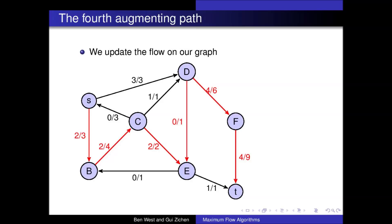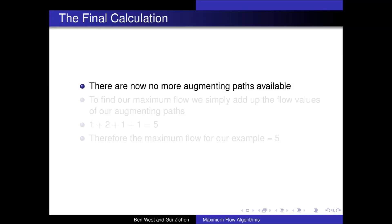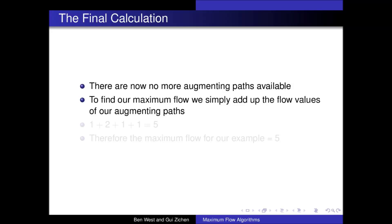Again we update our graph to show the flow now being pushed along each edge. At this point we can't find another augmenting path for our graph. We now need to find the maximum flow that can be pushed from the source to the sink of our graph. To do this we just add up the flow values we calculated for each augmenting path, giving us a maximum flow, for our example, of 5.